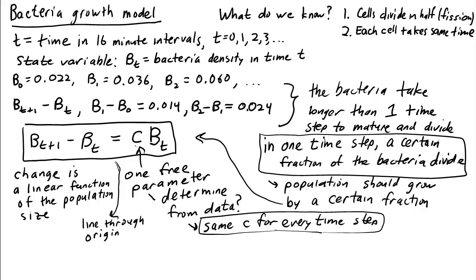The slope of our line is exactly this parameter c. From our fitting of the data, we can conclude that a reasonable value of c is 2 thirds. Our resulting dynamical system is that the change, bt plus 1 minus b sub t, is approximately 2 thirds times the population size b sub t.